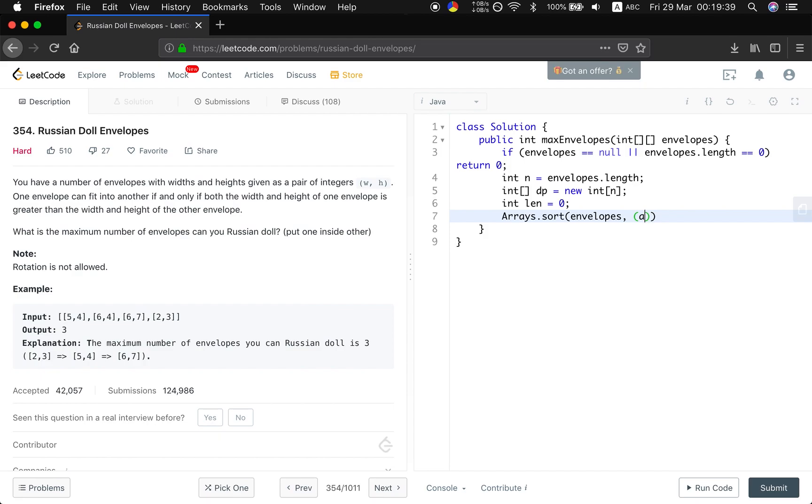So how to sort that? We use two elements A and B. Okay, if A[0] equals B[0], and I say we need to sort them descendingly, so B[1] minus A[1]. If not the case, we just use A[0] minus B[0], which is ascendingly.